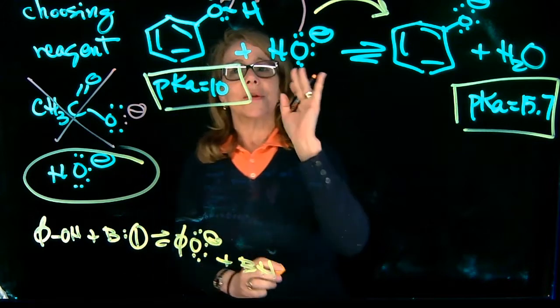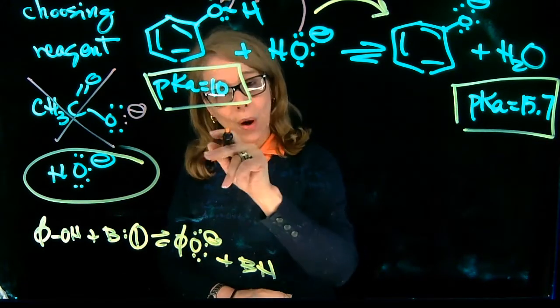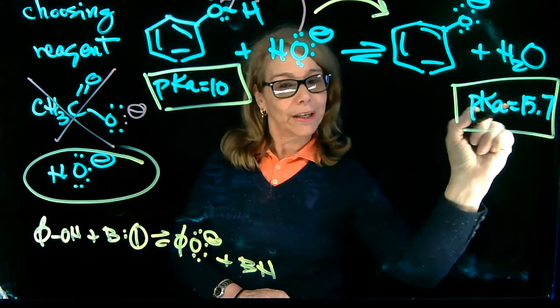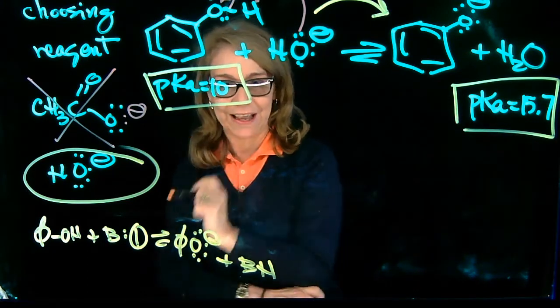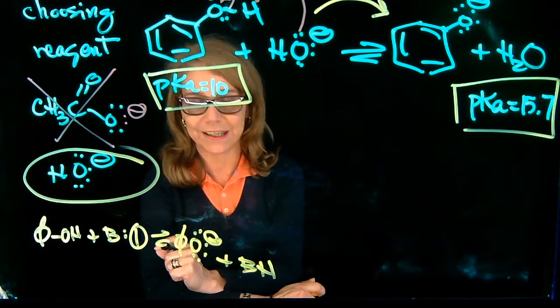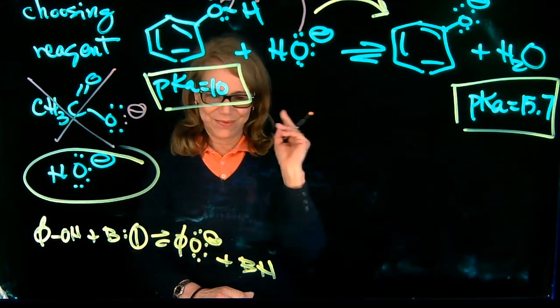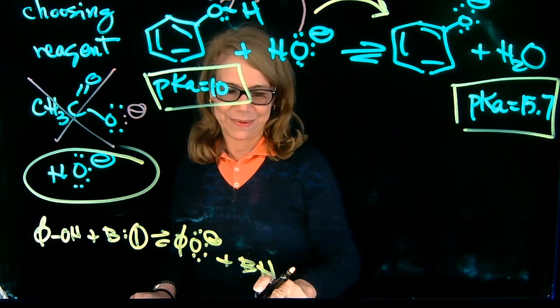And as a rule, to deprotonate an acid, we want to look for a base that has the pKa of its conjugate acid is larger than this. So something larger than 10 is what would work. And you will have a pKa chart. We do more examples of that acid-base. Thank you.